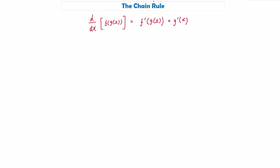So for example, if we had a function like (x³ + 2x) all to the power of 4, we could use the chain rule to differentiate this without having to expand the brackets four times. We call the bit inside the bracket our g(x), and the bit outside — to the power of 4 — our f(x).